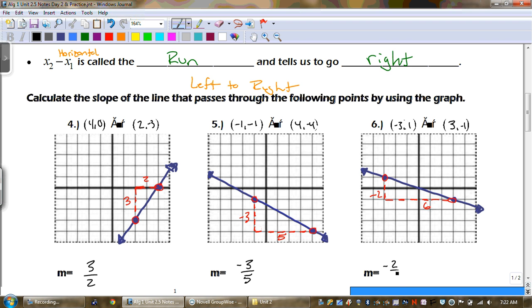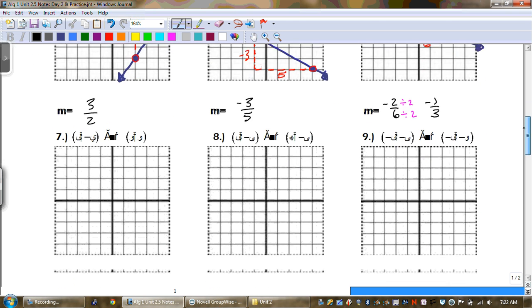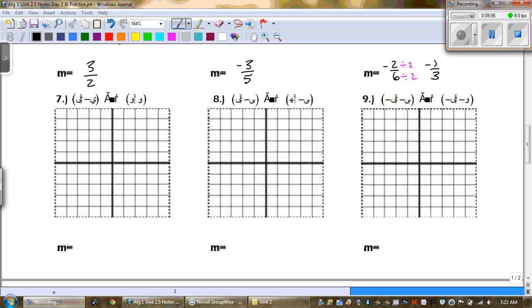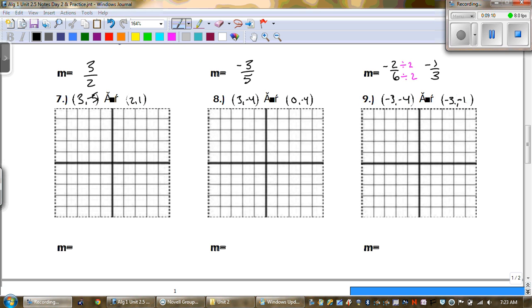So my slope is negative 2 over 6. Hold on, what can I do to that? If you can reduce it, you need to reduce it. So negative 2 over 6 is the same thing, it's negative 1 third. Alright, we got to do a couple more. Why don't you guys try number 7 on your own and see how you do. Go ahead and pause the video and good luck.